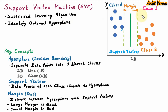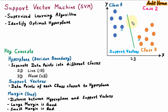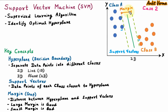Now we are taking case 2. In case 2, we are taking another hyperplane. With the help of support vectors, we are drawing these dotted lines. The average of these dotted lines is the hyperplane or decision boundary. And the distance between support vectors and hyperplane is the margin. This margin is even lesser than case 1. So this small margin is bad and this is not the optimal hyperplane.